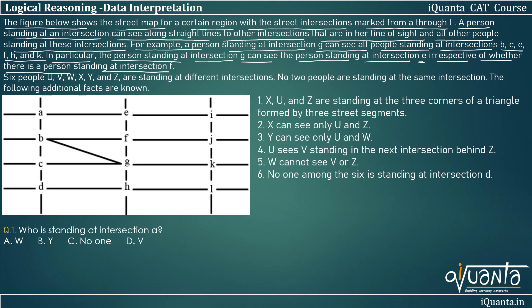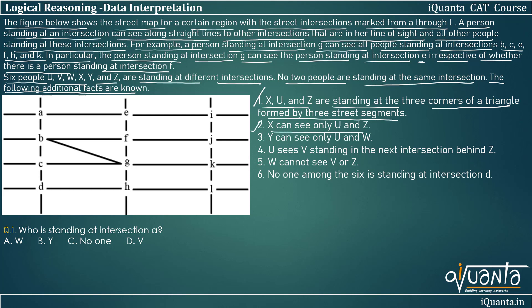Now, 6 people — U, V, W, X, Y, Z — are standing at different intersections, with no two people at the same intersection. The following additional conditions are known: First, X, U, and Z are standing at the three corners of a triangle formed by three straight segments. Second, X can see only U and Z. Third, Y can see only U and W. Fourth, U sees V standing in the next intersection behind Z — so the order is U, then Z, then V in a straight line. Fifth, W cannot see V or Z. We need to find an arrangement satisfying all these conditions.